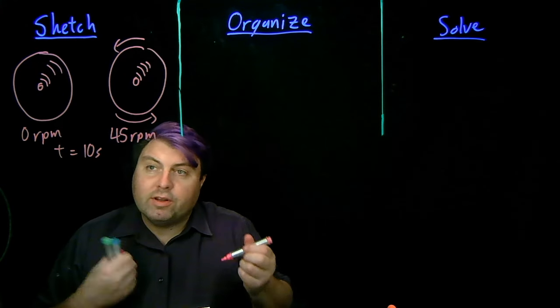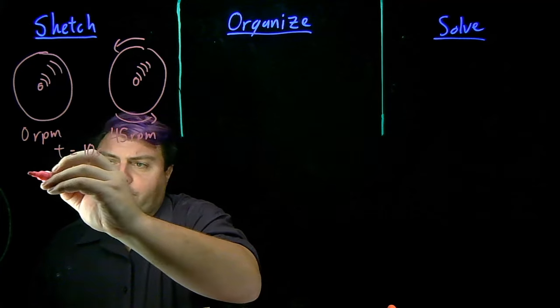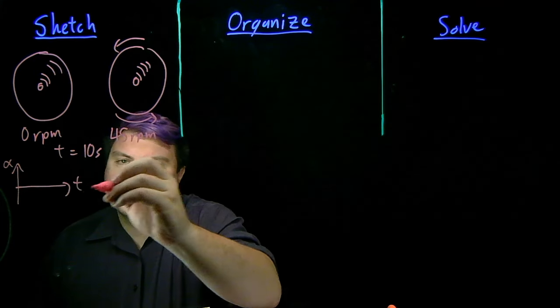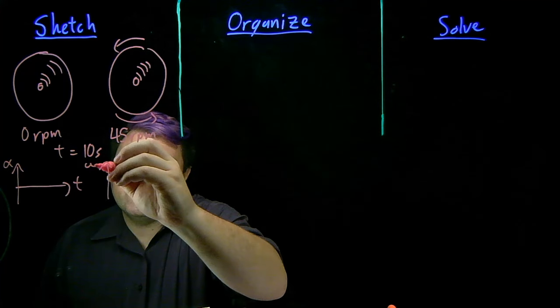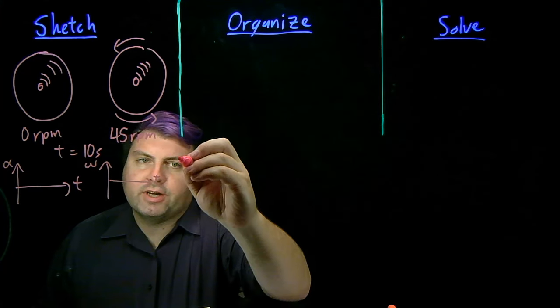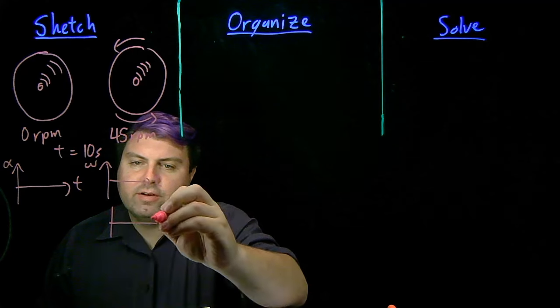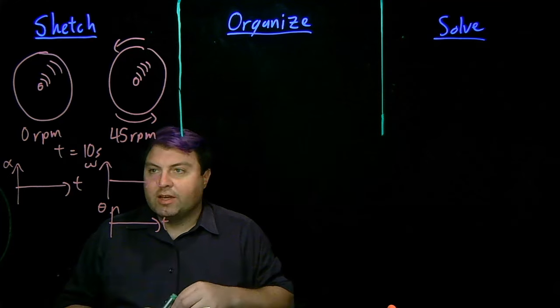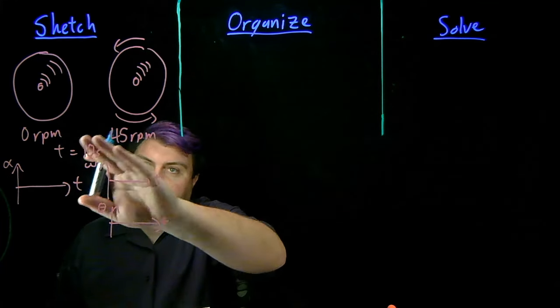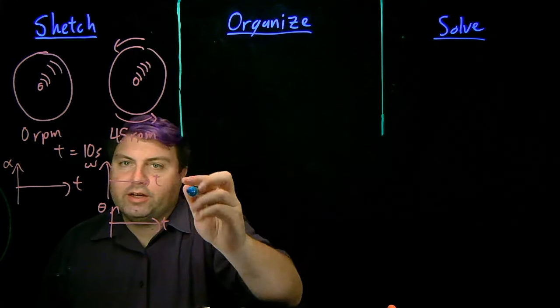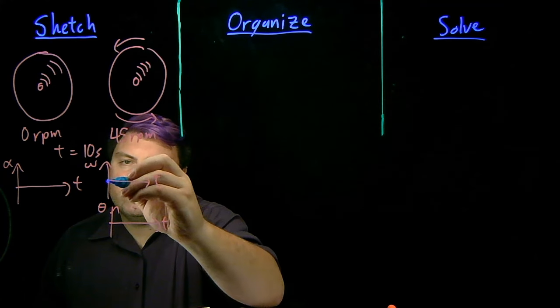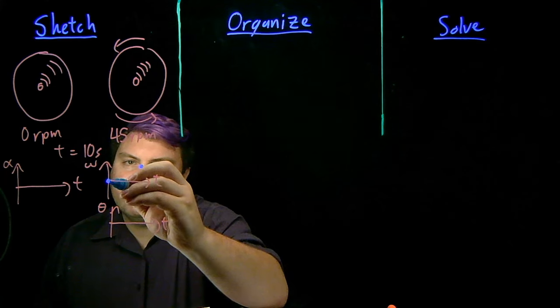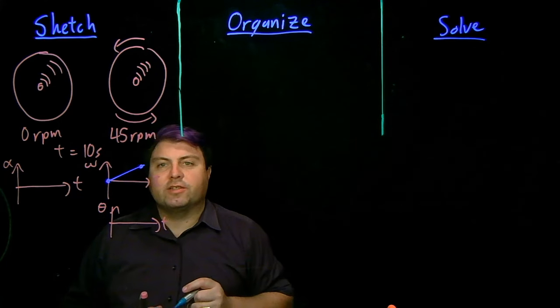So one thing that we can do is we can treat this very similar to one-dimensional kinematics. We can draw graphs of alpha versus time, graphs of omega versus time, graphs of theta versus time. In our case, we do have a change in omega. So we can write our initial and final, zero and 45. And we just have a nice constant acceleration.